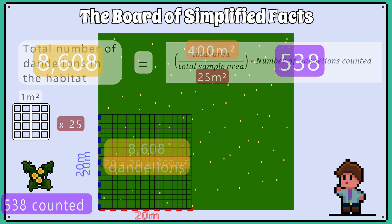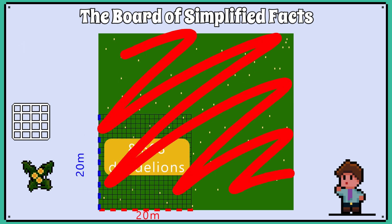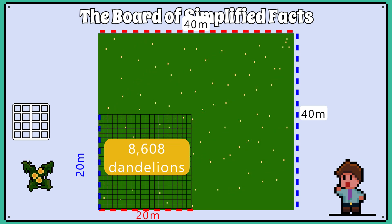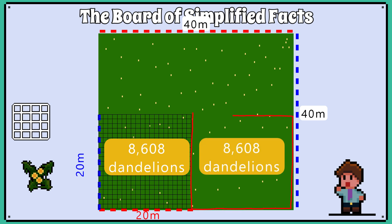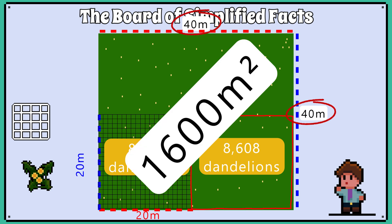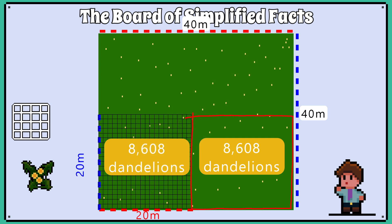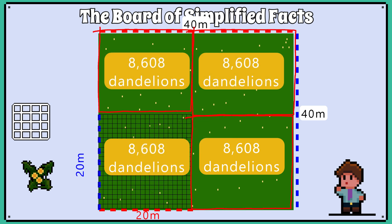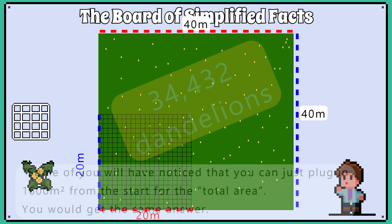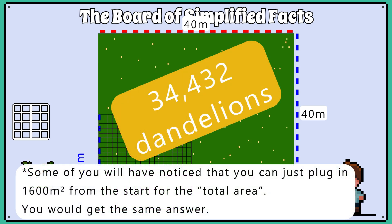We can now use this to estimate the abundance for the whole field, which happens to be 40 metres by 40 metres. You might say we can just double our 8,608 number to get the estimate for the whole field, but that would be wrong, because 40 times 40 is 1,600 square metres — 4 times the area of a 20 by 20 metre area. So, 8,608 multiplied by 4 is 34,432 dandelions in the whole field.